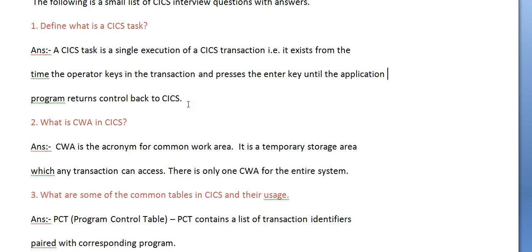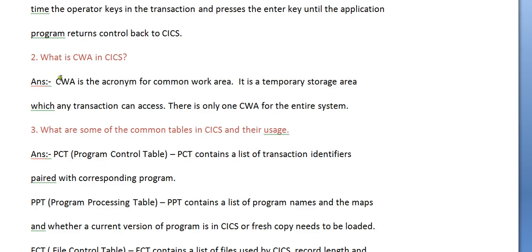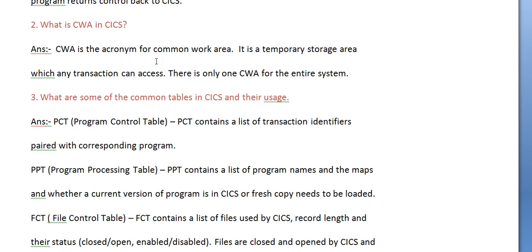What is CWA in CICS? CWA is the acronym for Common Work Area. It is a temporary storage area which any transaction can access. There is only one CWA for the entire system. This is very important.